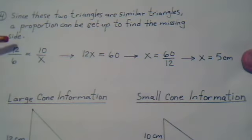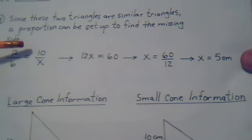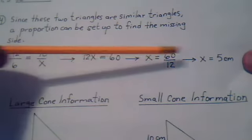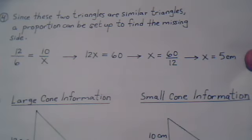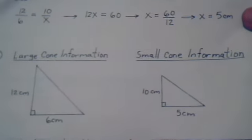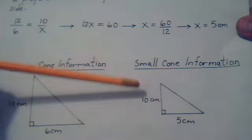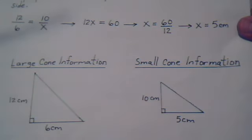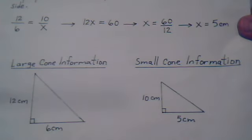So you set up your proportion, 12 compares to 6 the way that 10 compares to x. Do your algebra, and x turns out to be 5 centimeters. Now that we have height and radii information, we could start talking about the formula for the volume of a cone.